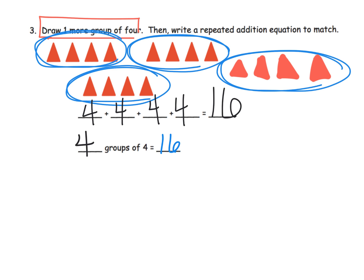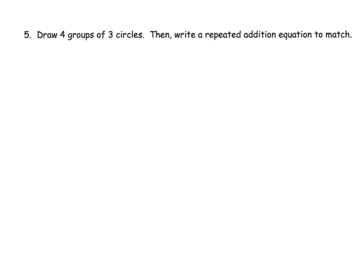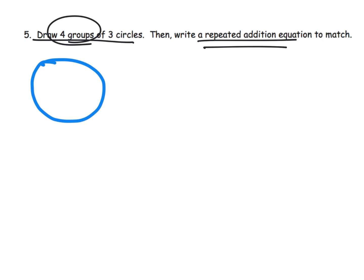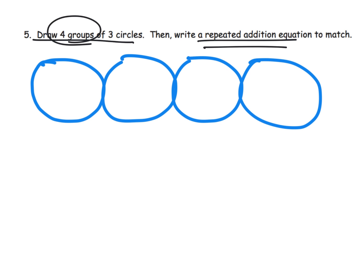One last example. It says: draw four groups of three circles, and then write the repeated addition equation. It might help to draw the four groups first, so let's draw four groups: one group, two groups, three groups, four groups. There are our four groups, and now we're supposed to draw three circles inside each group.